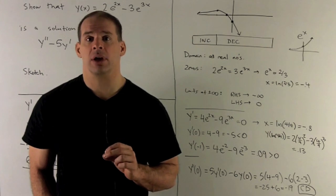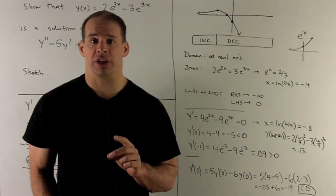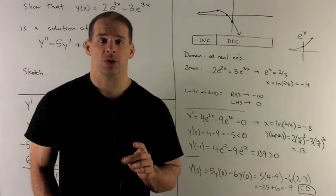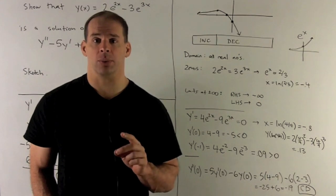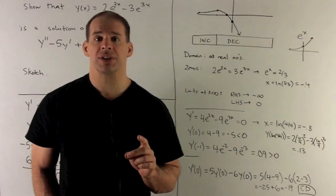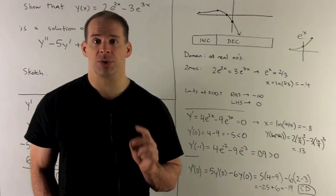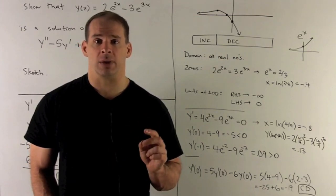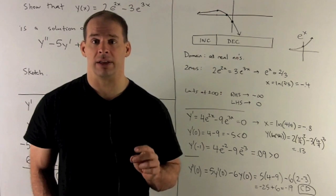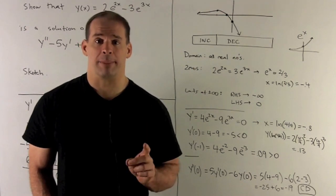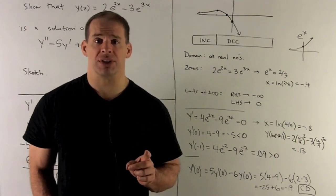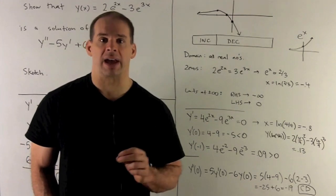Now, how about the x-axis? Well that's just solving our function equal to zero. So we'll want 2e^(2x) = 3e^(3x), divide both sides by 3, divide both sides by e^(2x), we'll have 2/3 = e^(3x)/e^(2x). Since they have the same base, we subtract the exponents, leaving me with e^x.